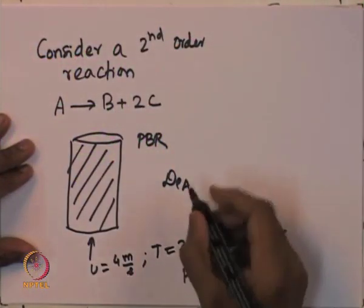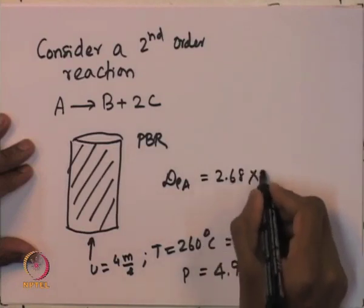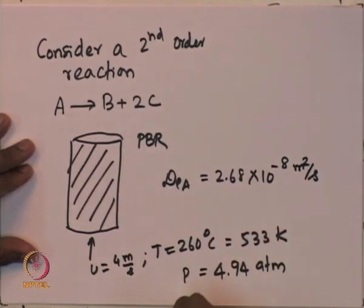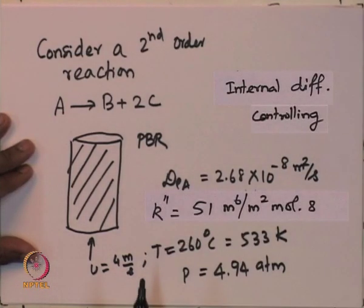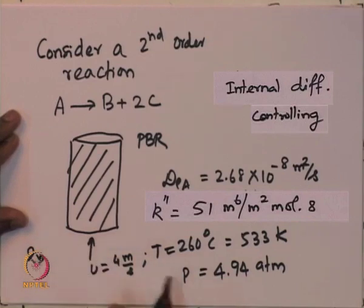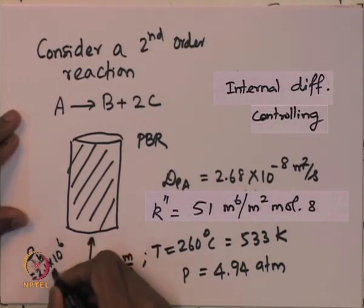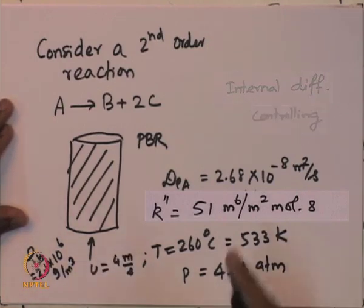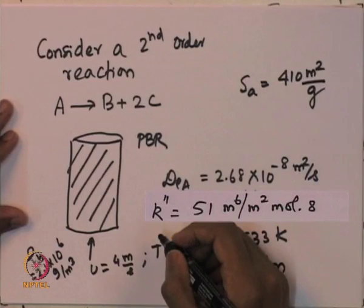The diffusivity of the species — the effective diffusivity — is given by 2.68×10⁻⁸ m²/s. The specific reaction rate is 51 m⁶/(m² mol s). The density of the catalyst particle is about 2.1×10⁶ g/m³, and the surface area available for the catalytic reaction is 410 m²/g of catalyst.